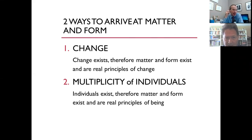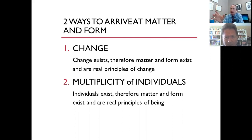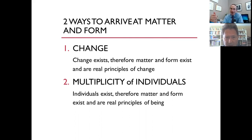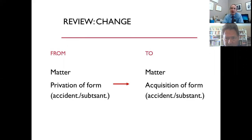The other one we touched on briefly last time, clearly not in depth and we didn't cover all the nuances of it, but it's on the question of the multiplicity of individuals. Individuals exist of the same kind — different dogs, different human beings, different trees — and therefore matter and form exist and are real principles of being.